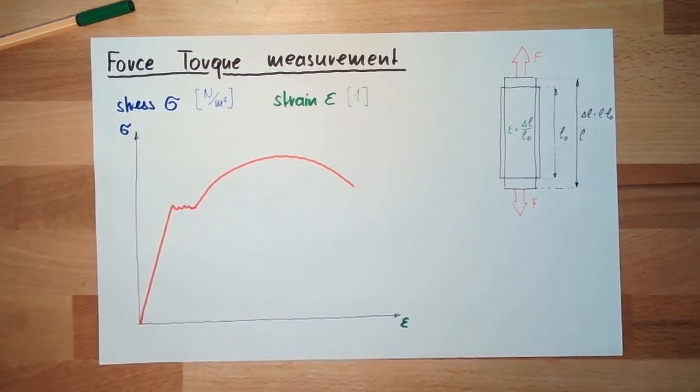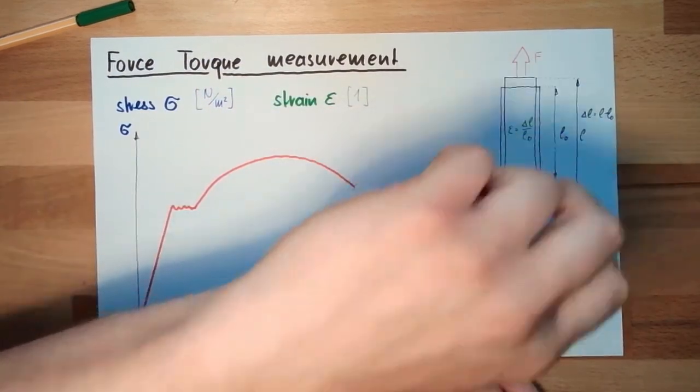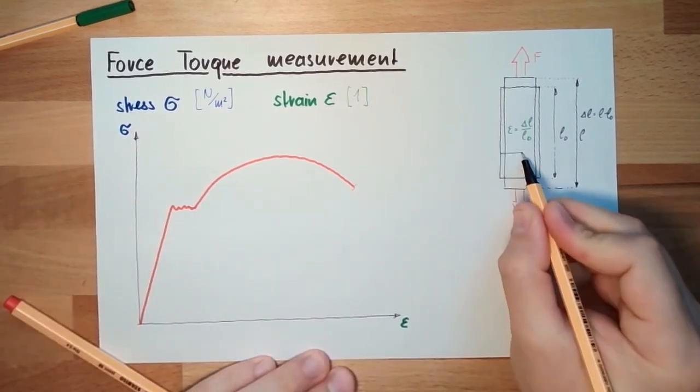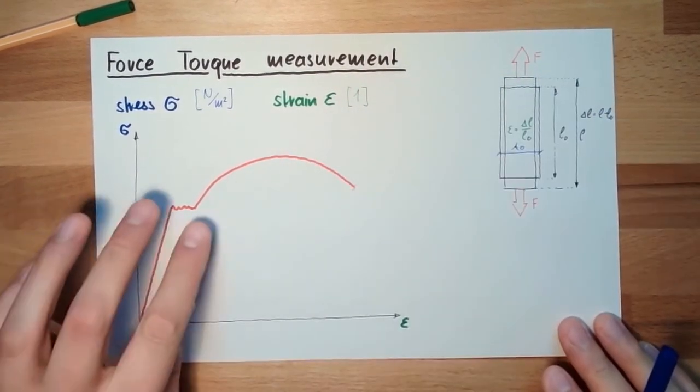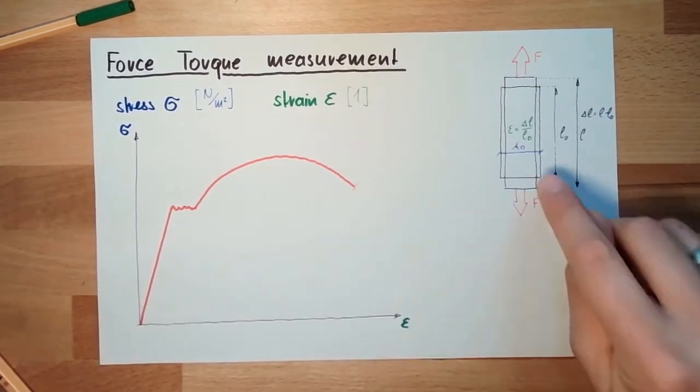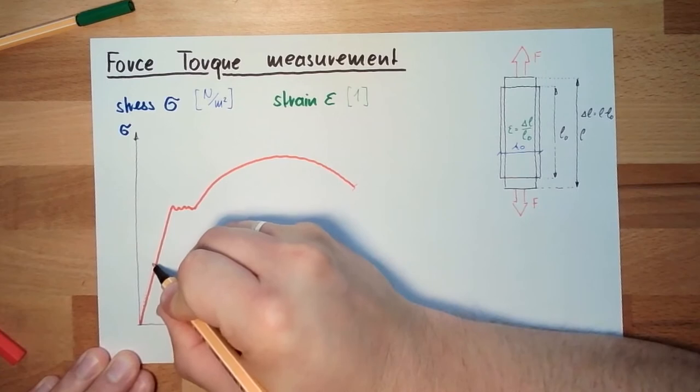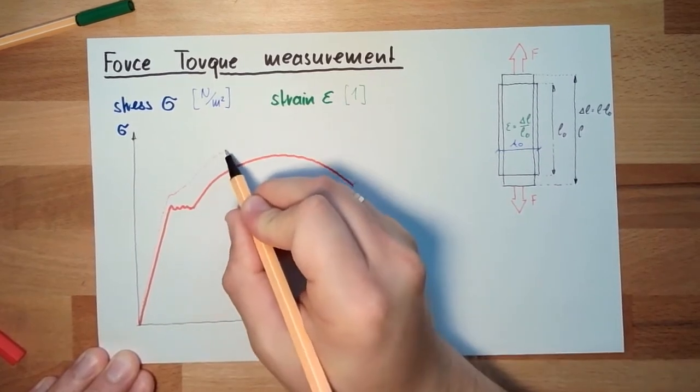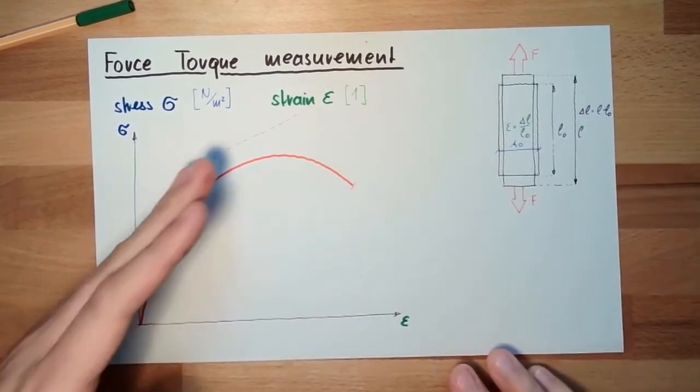And here, ping, I finally ripped it apart. This is if I calculate the stress always on the original square. Here is the original square, A zero. If I always calculate it on the original square, then it looks like this. If I calculate it to the real square, the actual square, then this is a little bit steeper here. This will then move up and go very high up. This is the real curve.